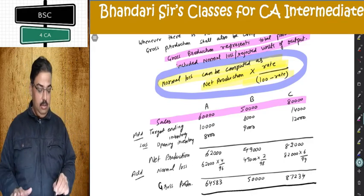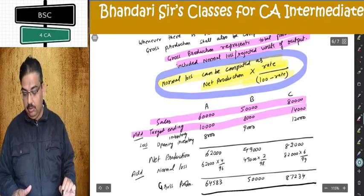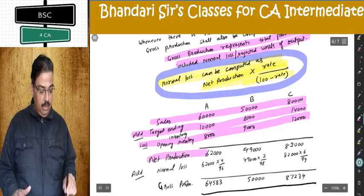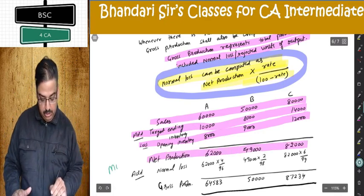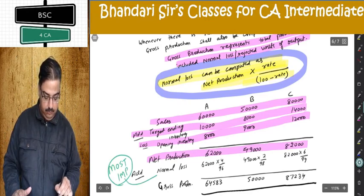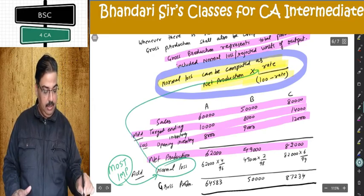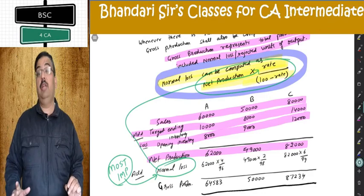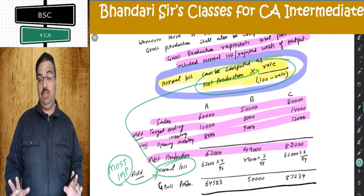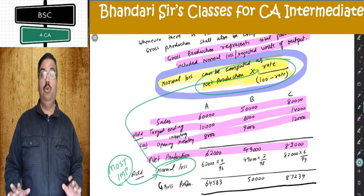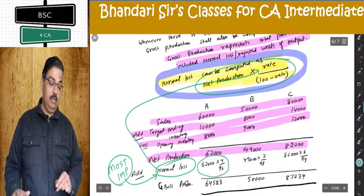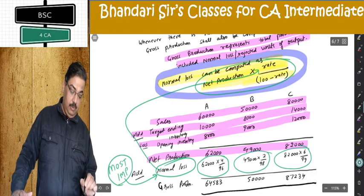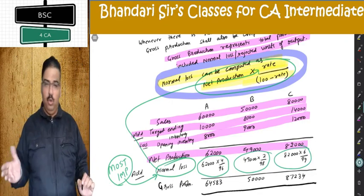Now apply the normal loss formula. For 62,000 net production at 4% loss rate: 62,000 × 4/96. Units cannot be in fractions — approximate to nearest unit. For 2% rate use 2/98; for 6% rate use 6/94. The rates are given in the third table under normal loss in production. Add net production and normal loss — some students ask why add, not deduct? Because gross = net + loss.